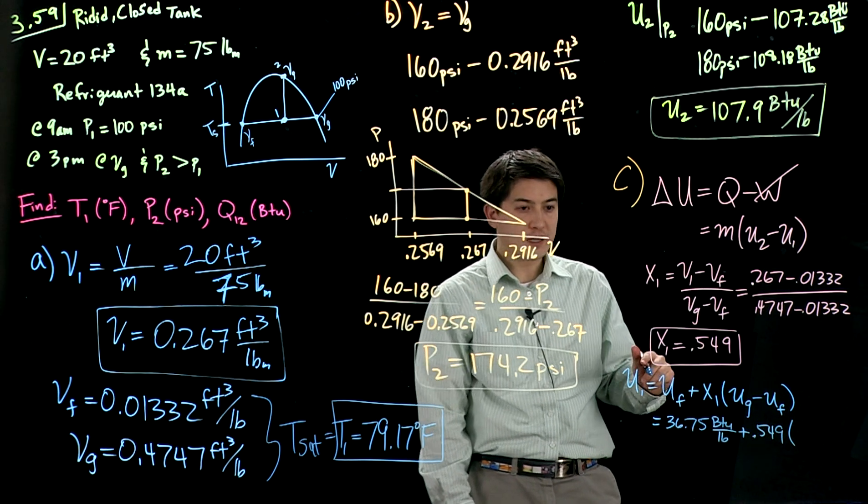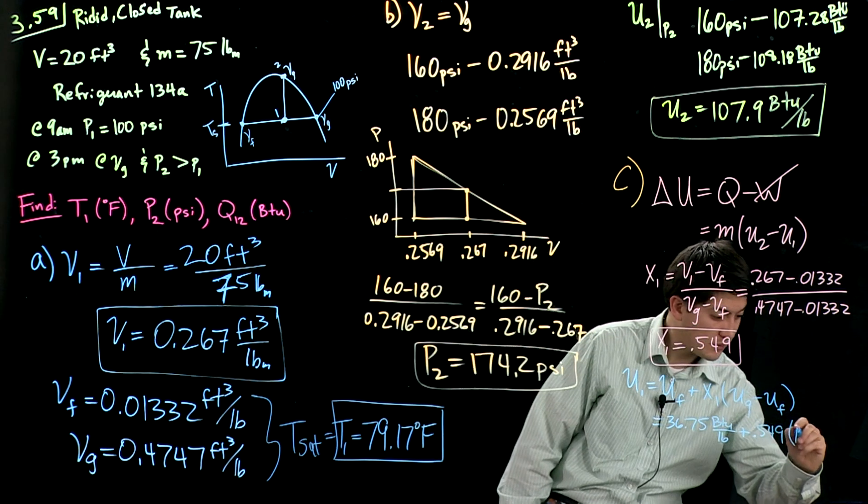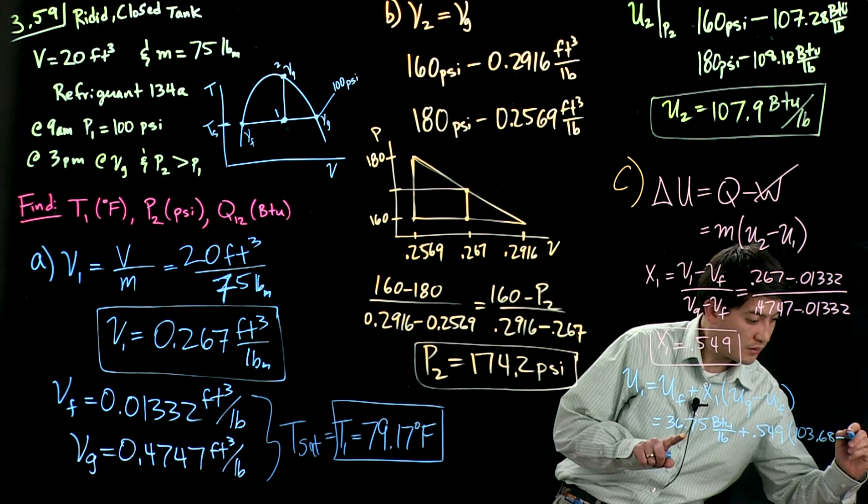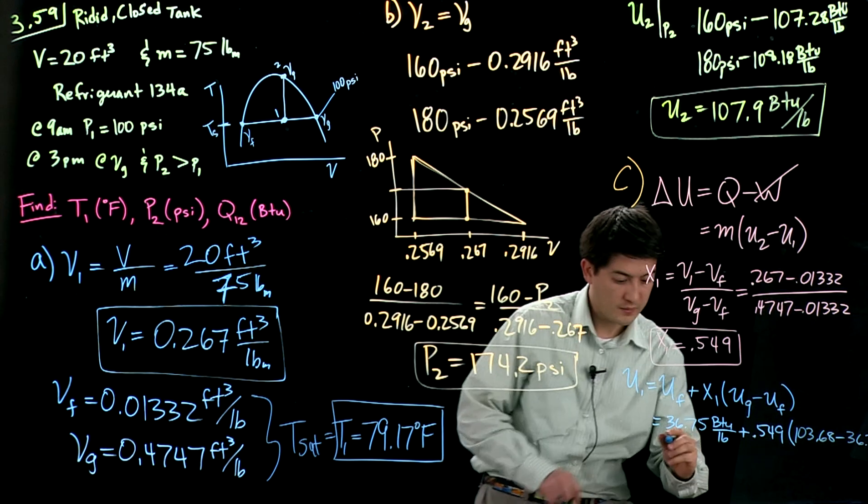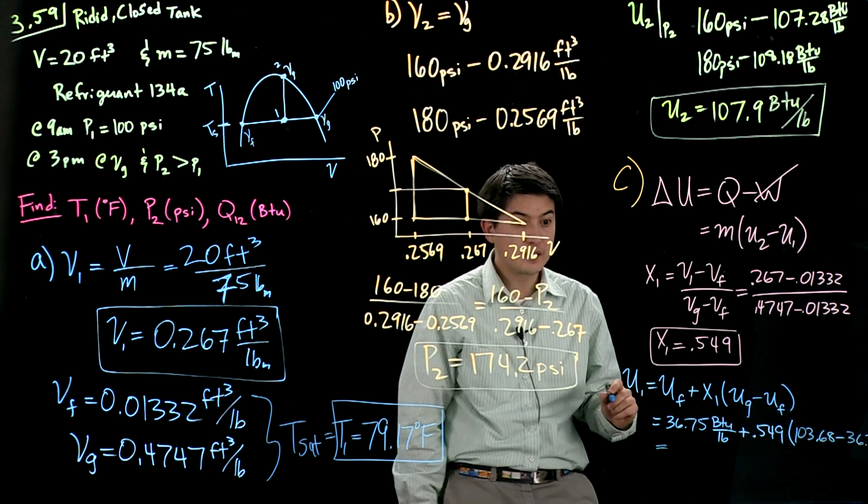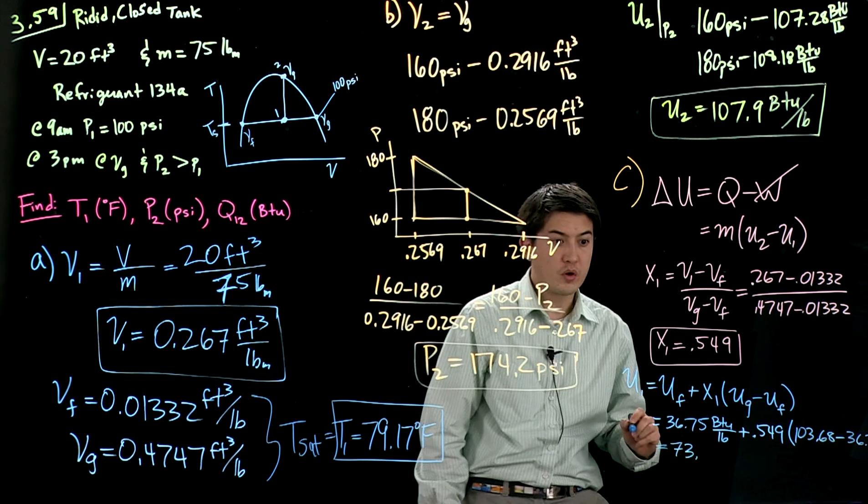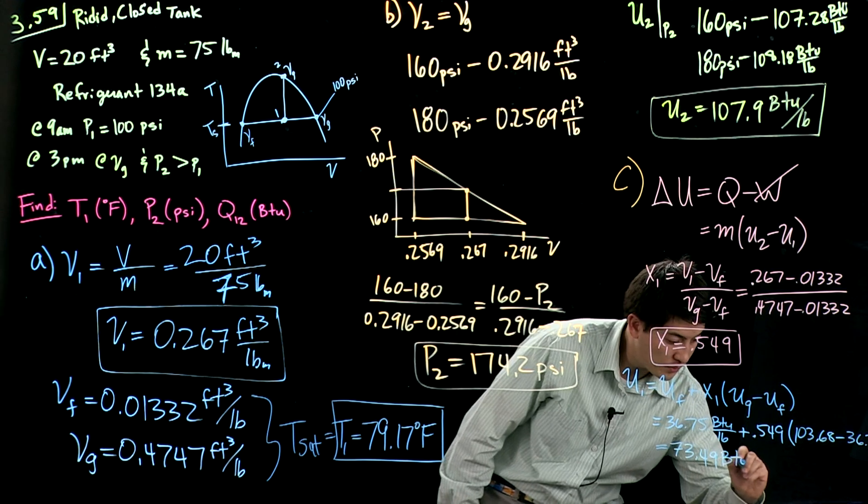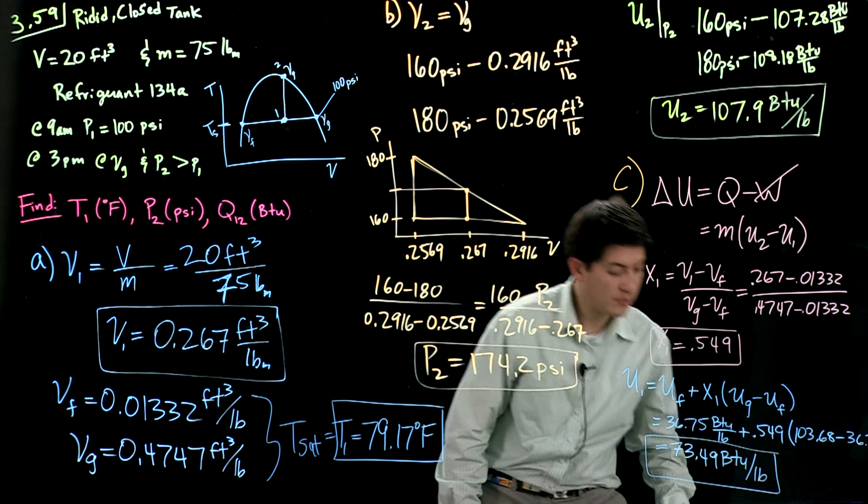This value is 36.75 BTU per pound plus 0.549 times. Specific energy of gas is 103.68 minus 36.75. Specific energy at state 1 is 73.49 BTU per pound.